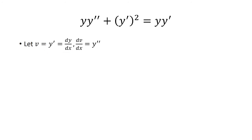So y prime is just the derivative of y with respect to x, which we can write as dy/dx. When I take the derivative of v with respect to x, that's just taking the derivative of y prime one more time, and so we get y double prime as the derivative of y prime.